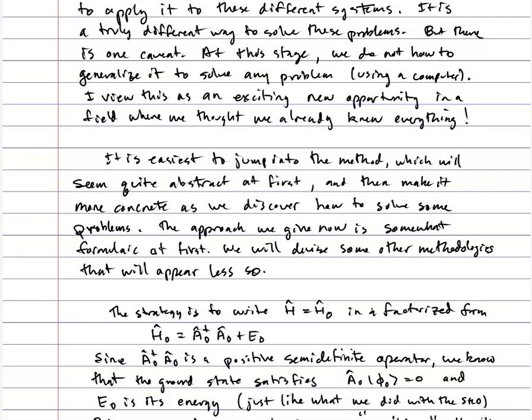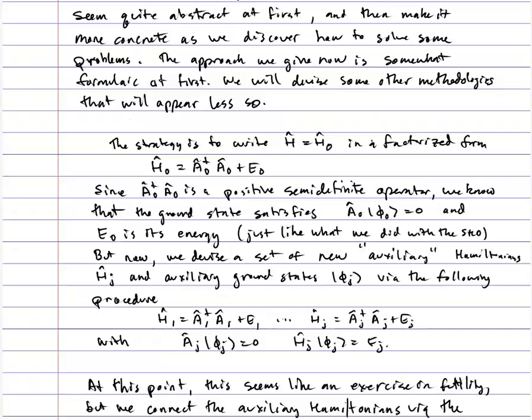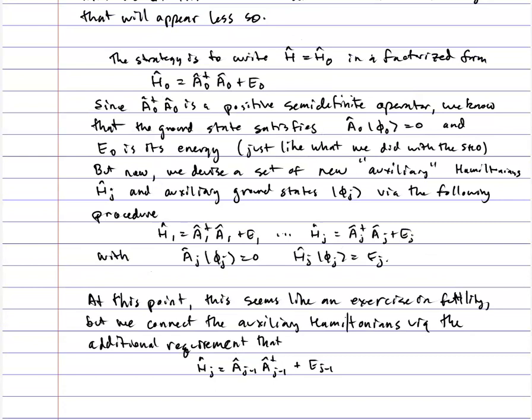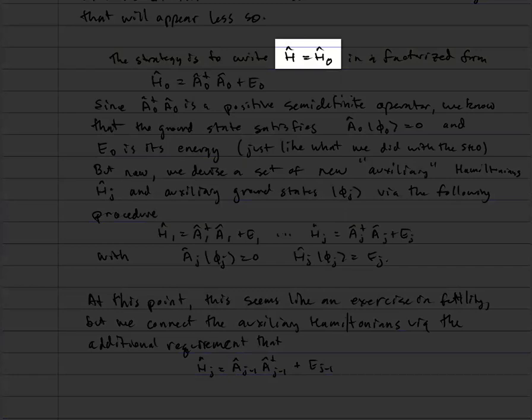It's going to be easiest to jump into the method. You're going to find it quite abstract at first, and we're going to make it concrete by looking at some specific problems. I'm also going to give it to you in a rather formulaic way at first. Our strategy is we want to solve the energy eigenvalues of the Hamiltonian H, which I'm going to call H sub zero. The zero does not indicate that it's an unperturbed problem — that's my full Hamiltonian.